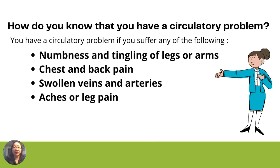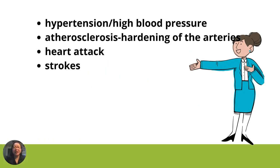How do you know that you have a circulatory problem? You have a circulatory problem if you suffer any of the following: numbness and tingling of legs or arms, chest and back pain, swollen veins and arteries, aches or leg pain, and hypertension or high blood pressure. Atherosclerosis, also known as hardening of the arteries, occurs when plaque builds up on the walls of your arteries and eventually blocks blood flow. Plaque is made of cholesterol, fat, and calcium. Another one is heart attack, which occurs when not enough blood reaches your heart due to artery blockage. And lastly, strokes occur when a blood clot blocks an artery in the brain and reduces blood supply.